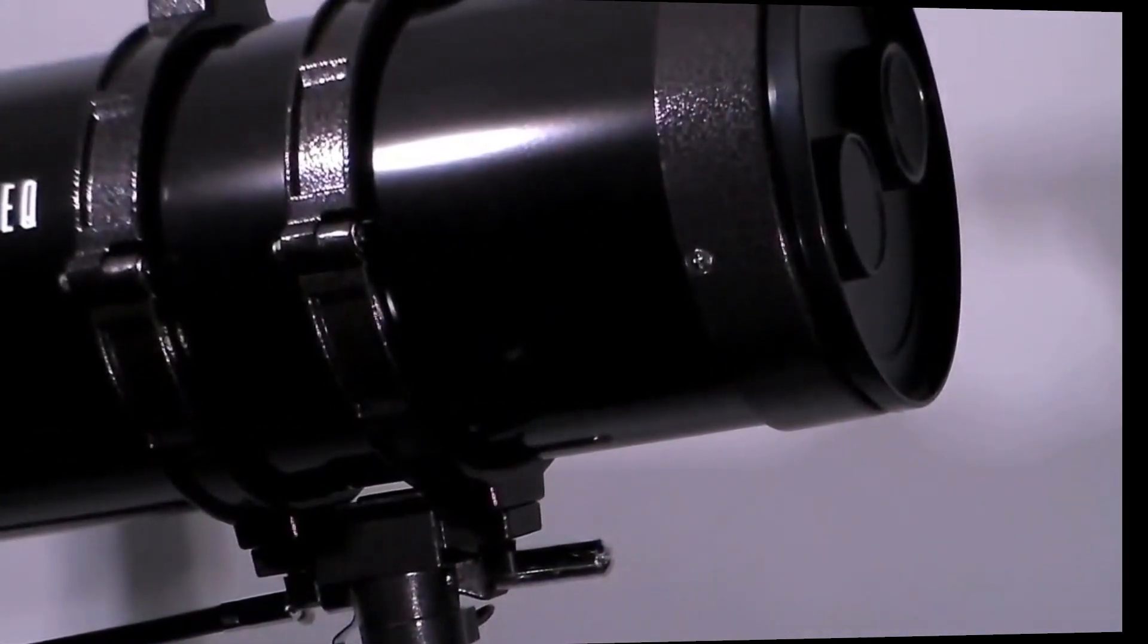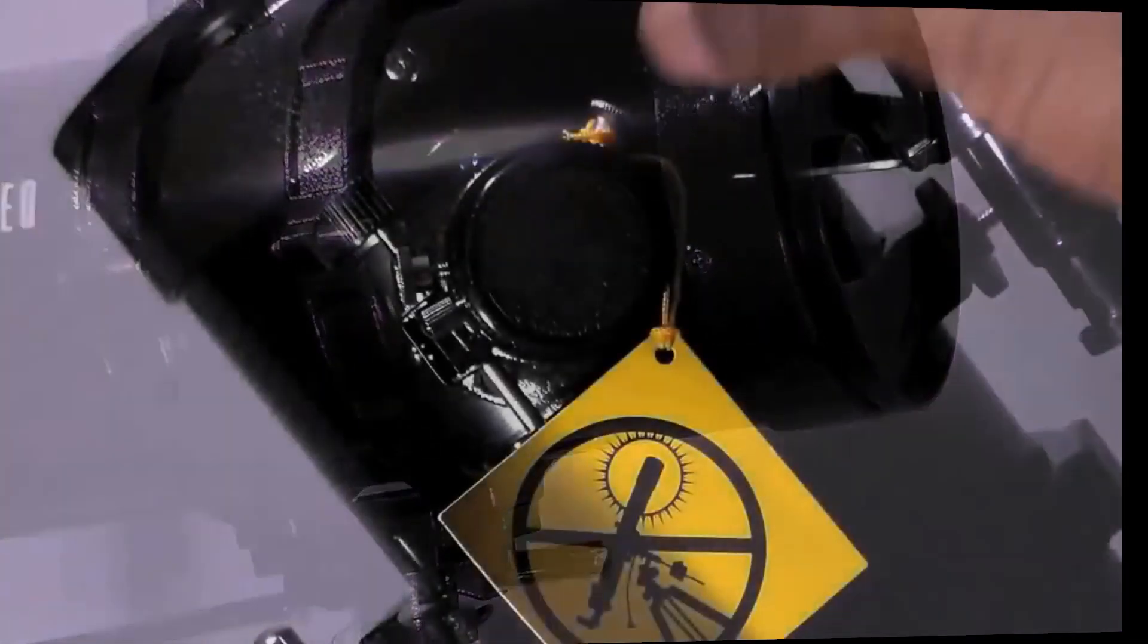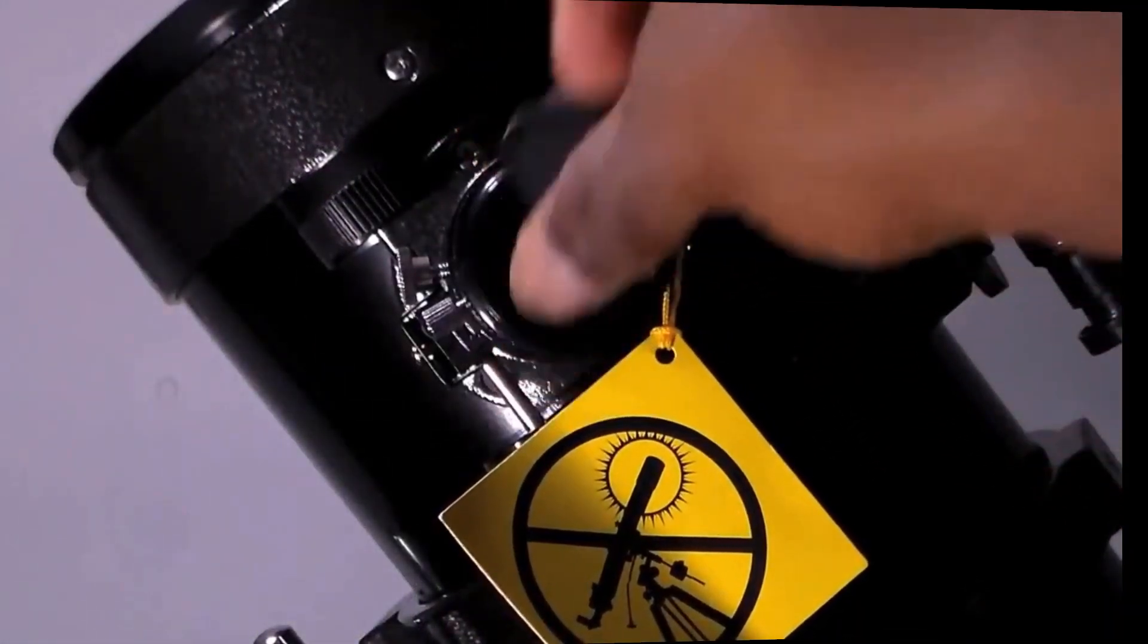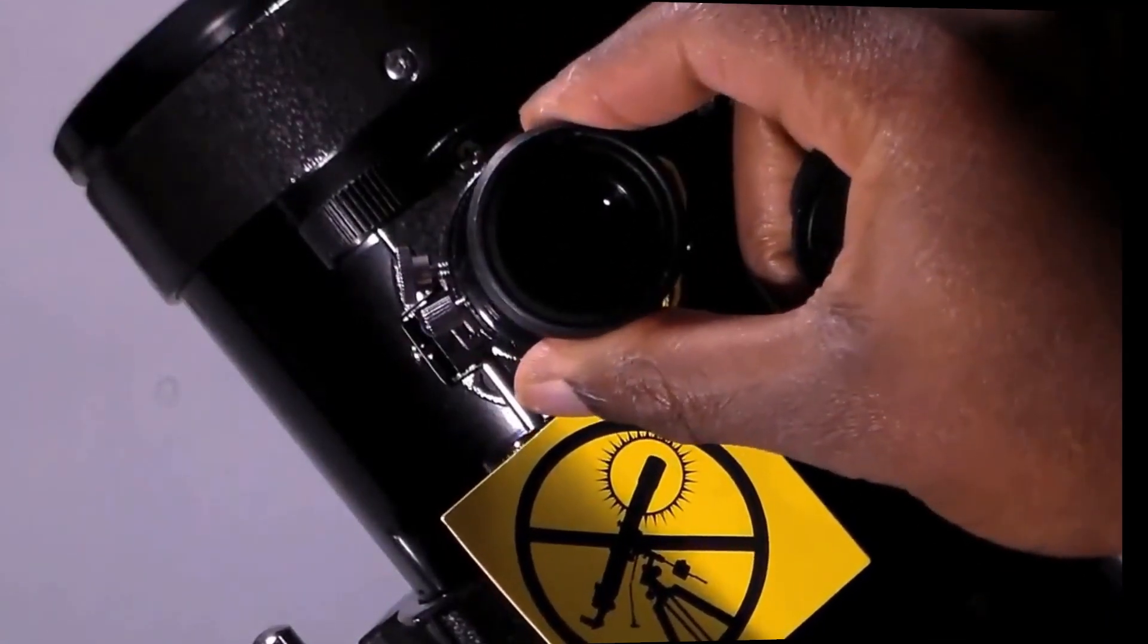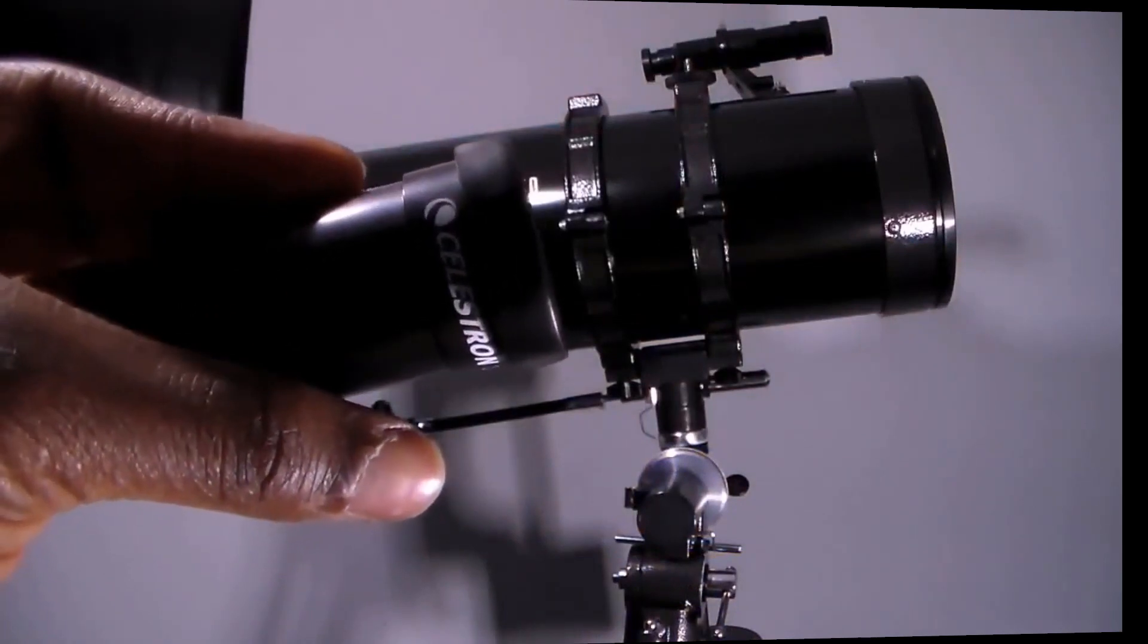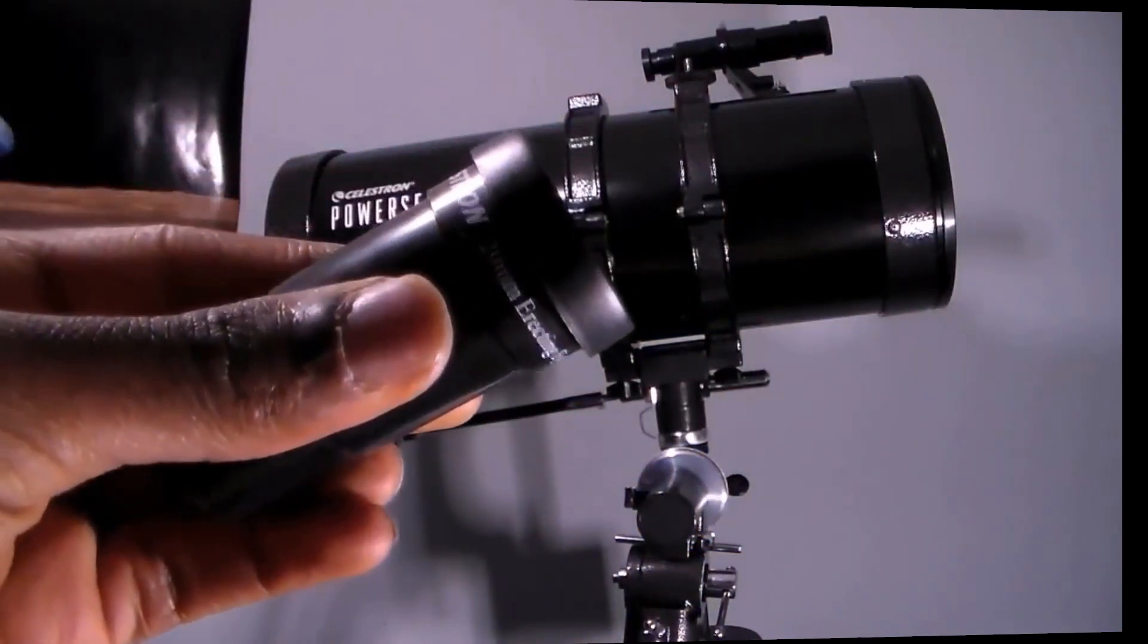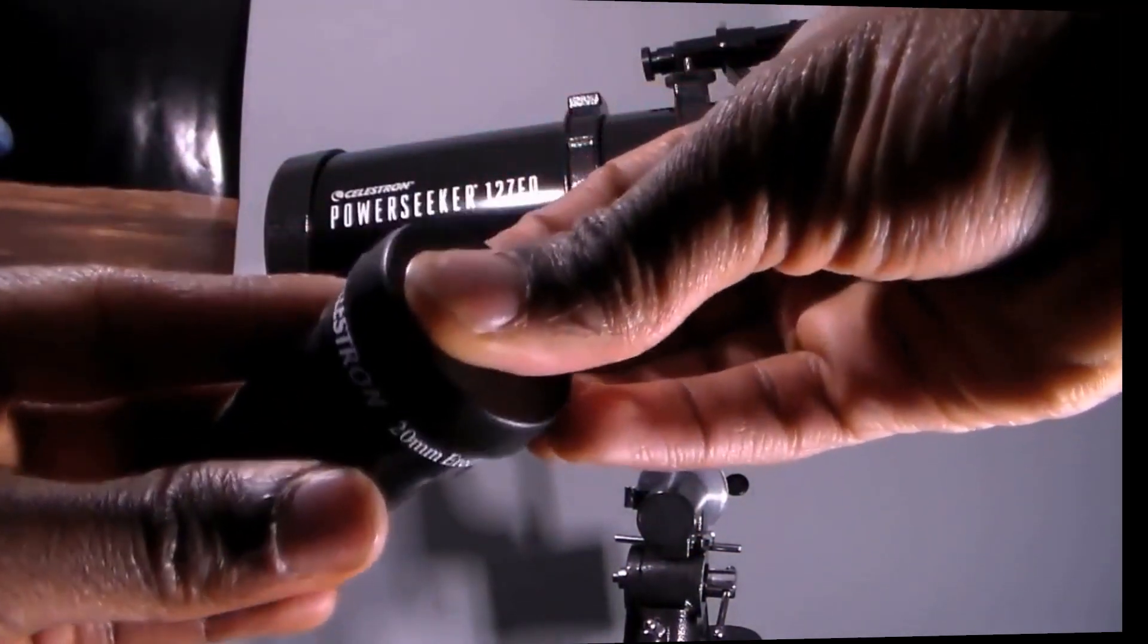Then remove the protective cap to put in one of two of the eyepiece adapters. The focal length of eyepiece 1 is 20 millimeters or 0.79 inches. The focal length of eyepiece 2 is 4 millimeters or 0.16 inches.